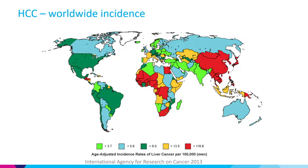A few words about the incidence of HCC. There is variability worldwide. A lot of cases are in high-incidence areas where the rate can be up to 100 to 116 per 100,000, which is really enormous for men — men are more likely to have HCC than women. You can see China, Mongolia, Southeast Asia, Japan, and Korea have very high incidence, as do West Africa and some countries in Central America.